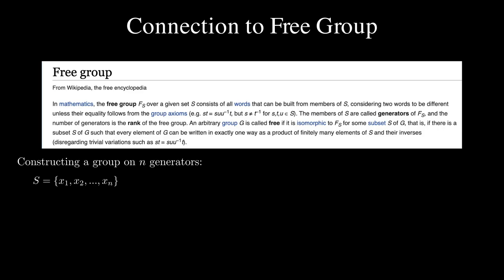We will construct what is called a group on n generators. Let S be a set of n symbols x sub 1, x sub 2 and so on and we suppose that for every element in S there is a unique corresponding inverse. Let S inverse be the set of all these inverses and T the union of S and S inverse. We will define a word in S to be any product of elements of T.